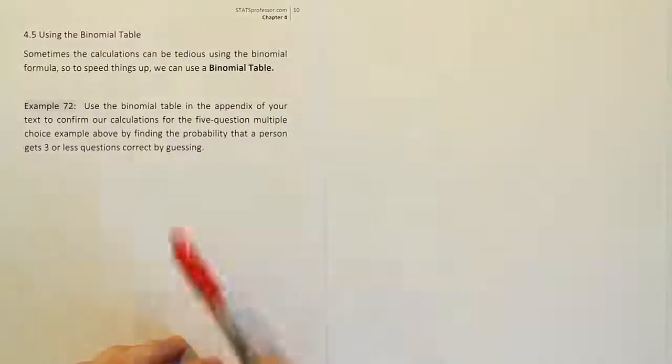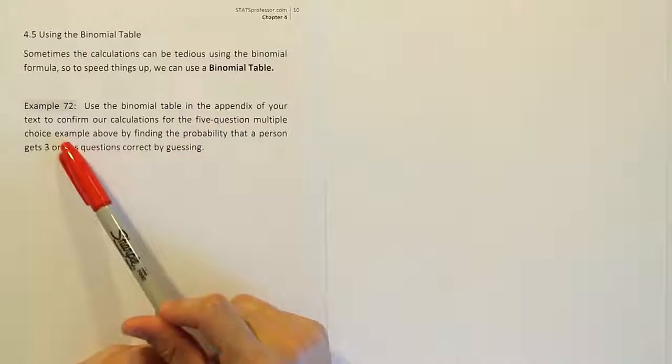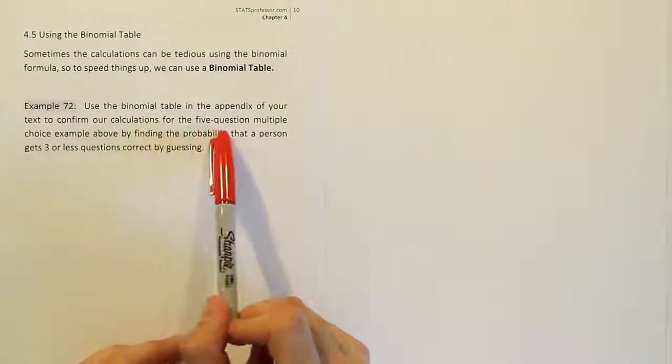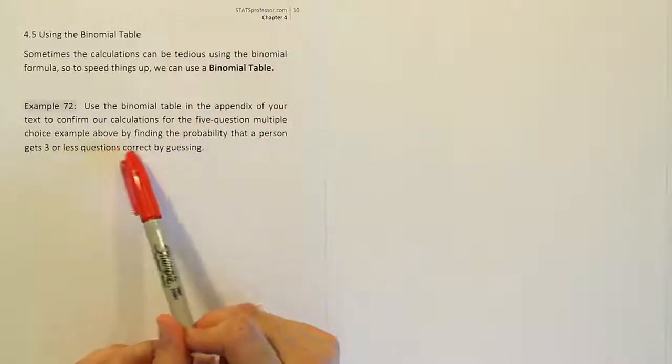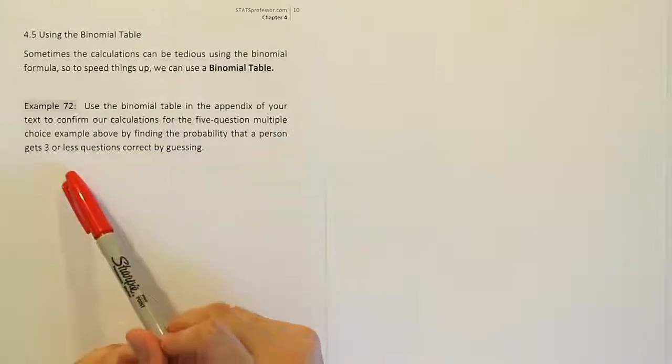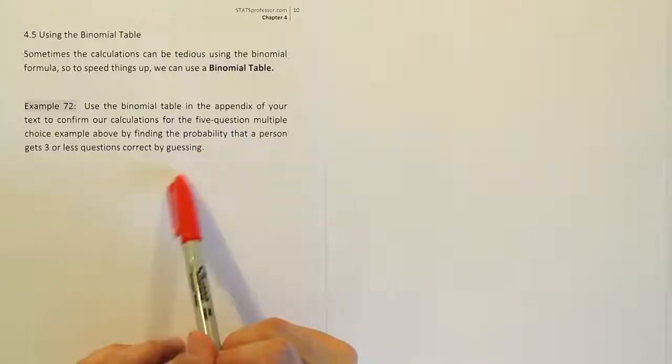Example 72. Use the binomial table in the appendix of your text to confirm our calculations for the five question multiple choice example above by finding the probability that a person gets three or less questions correct by guessing.